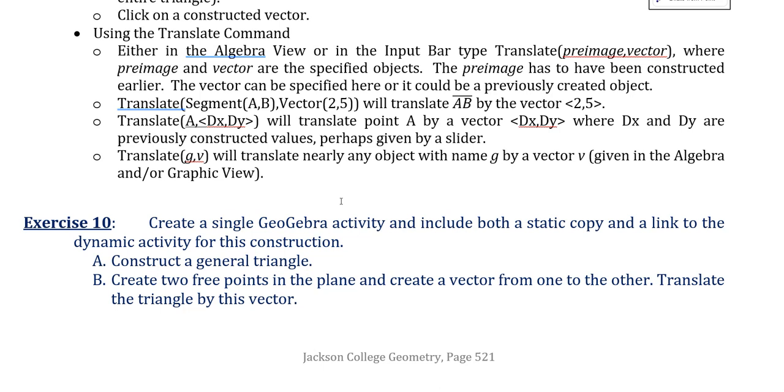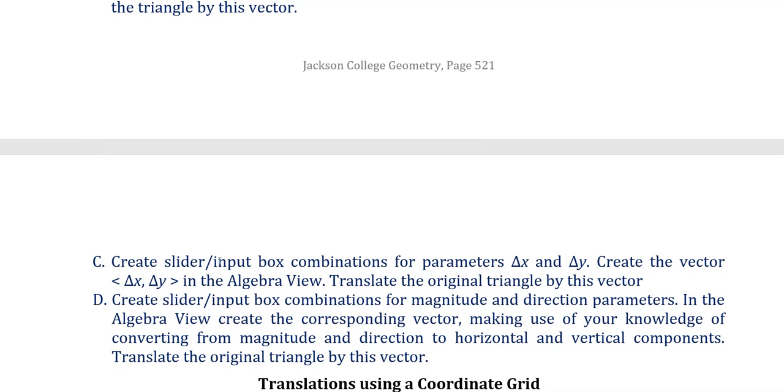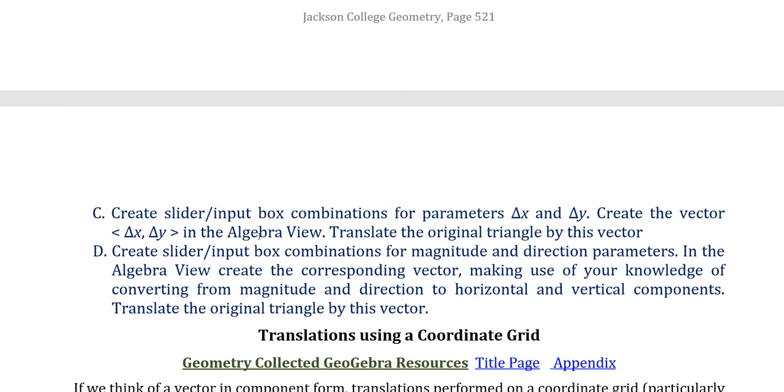And then here's the exercise. Create a single GeoGebra activity. Include both a static copy and link. Construct a general triangle. Create two free points in the plane and create a vector from one to the other and translate the triangle by that vector. Another is to create an input slider box combination for the parameters delta x and delta y. Create the vector delta x delta y in the algebra view and translate the original triangle by that vector. And the other way to do it is by magnitude and direction and do slider input box combinations for the magnitude and another one for the direction parameter. And then the algebra view, create the corresponding vector, making use of your knowledge of converting from magnitude and direction to horizontal and vertical components and translate the triangle by that vector.